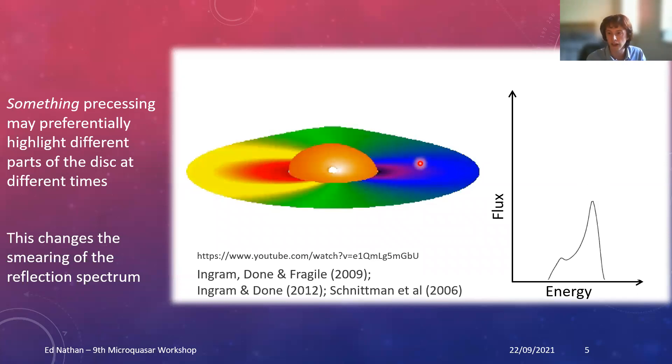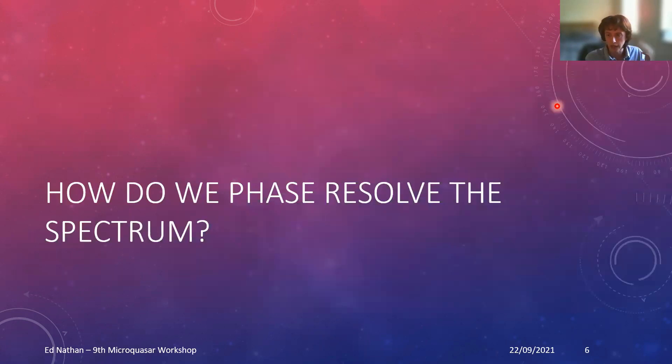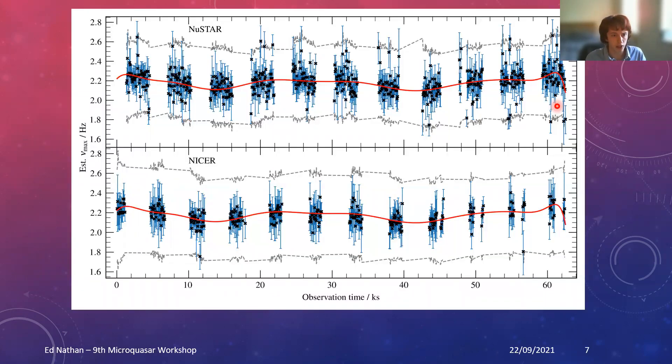It could at any time preferentially highlight different parts of the disk. From our point of view, those parts of the disk have different redshift or blueshift. At different times, due to that preferential highlighting, we might see the smearing of the reflection spectrum changing, which could cause, for example, the iron line to rock to and fro as different more blueshifted or more redshifted parts change, or some other spectral effects. So let's try to look for this. We want to phase the overall spectrum and see how our spectrum is changing with QPO phase.